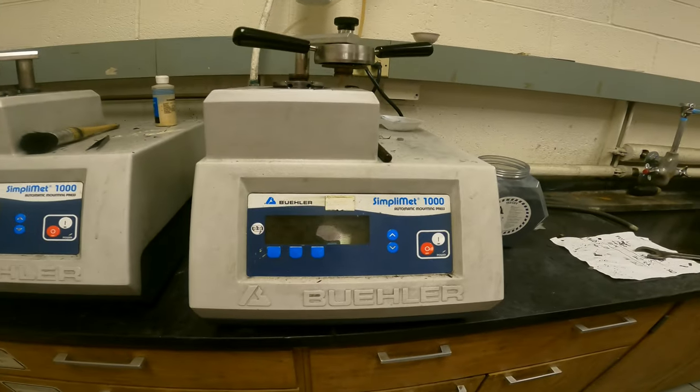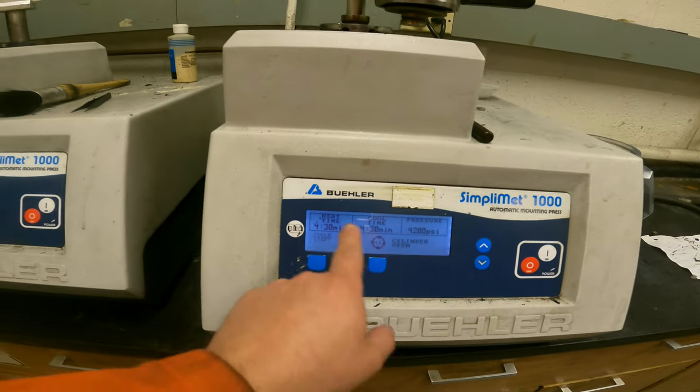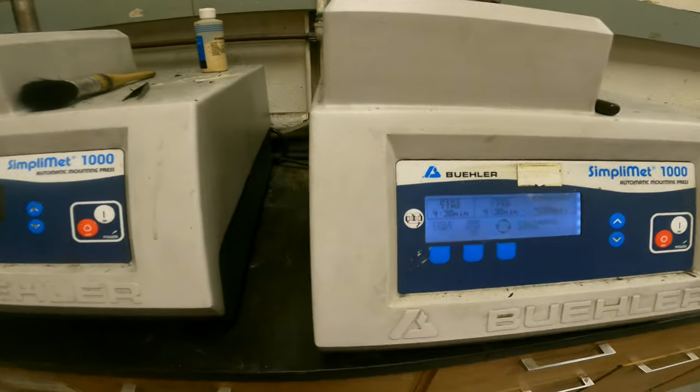Okay, so these are the mounting presses that we're going to use. Buehler machines, they already have some configuration here, so we don't need to change any of that. They are already configured, both of them.